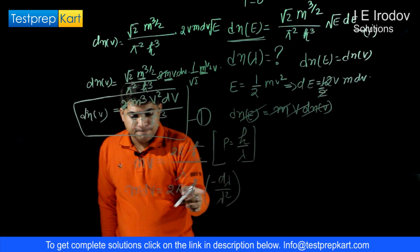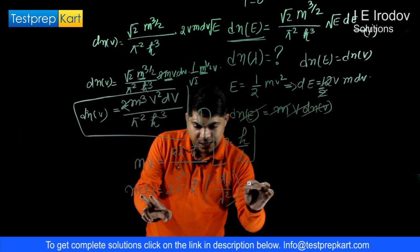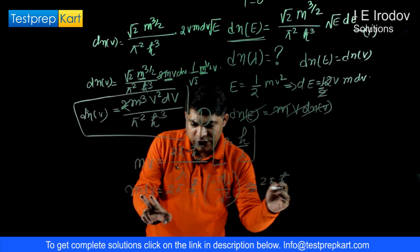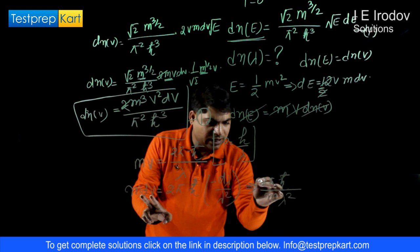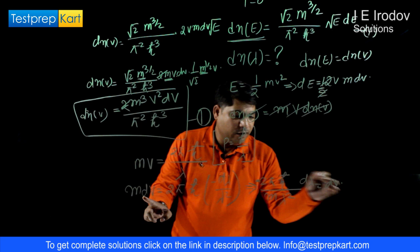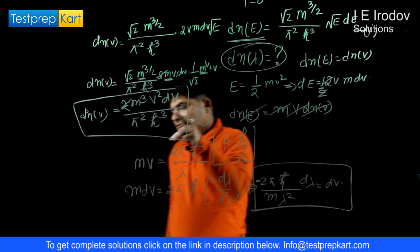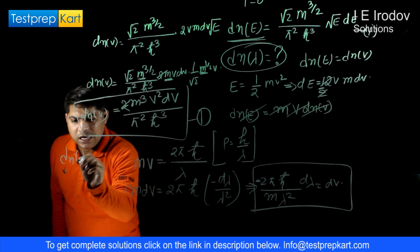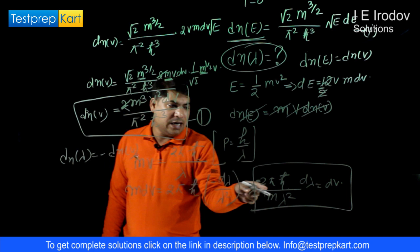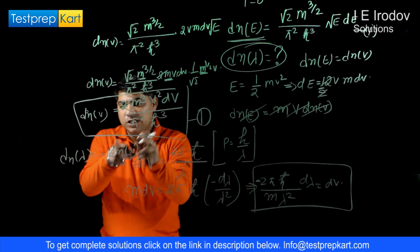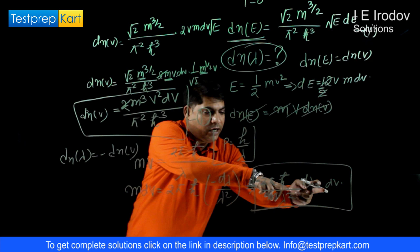From this differentiation we get a relation between dV and dλ: dV equals minus 2π h-bar over m times λ squared, times dλ. So we can rewrite the distribution function in terms of dN(λ), which is what we actually want. Note that dN(λ) equals minus dN(V), accounting for the sign.